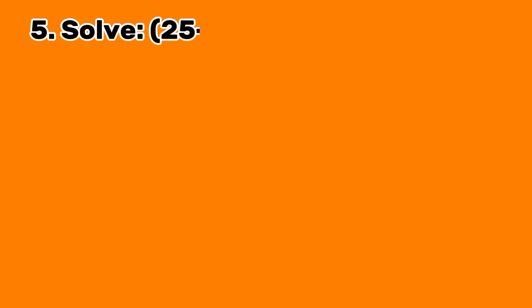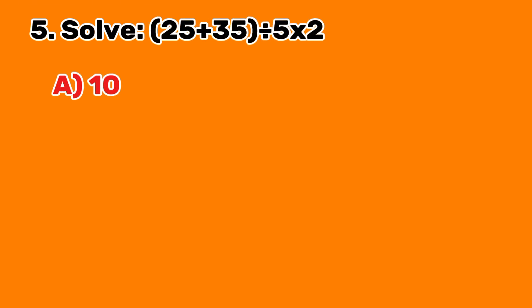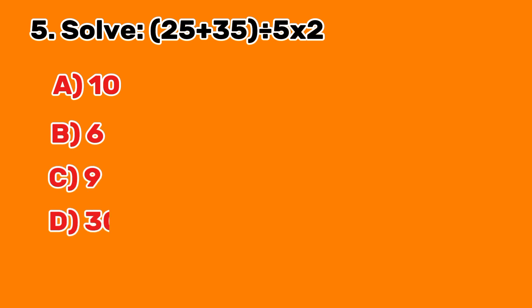Question 5: Solve 25 plus 35 divided by 5 times 2. A. 10. B. 6. C. 9. D. 30. Answer B: 6.